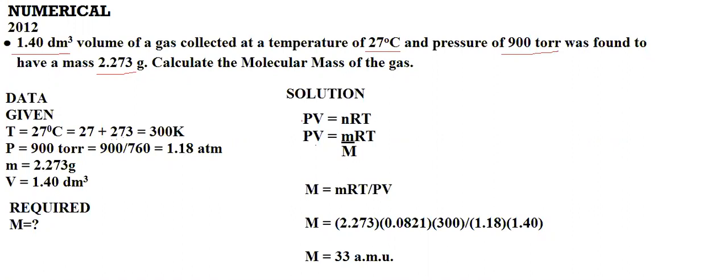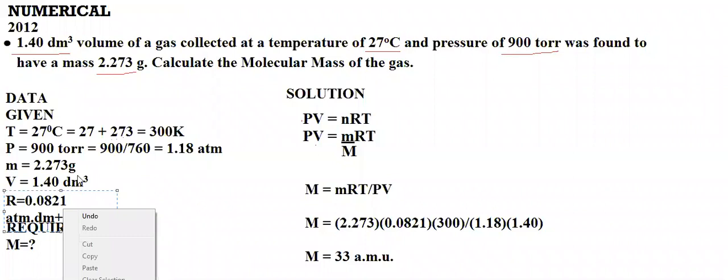We have not discussed R here, but if you want, you can put R's value. Because R is constant, it is good to write it in the data. R's value is 0.0821 atm·dm³ per mole per kelvin.